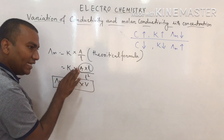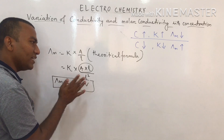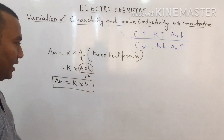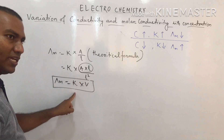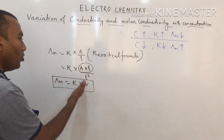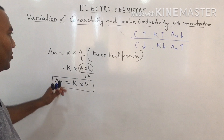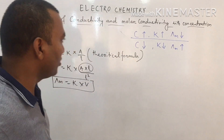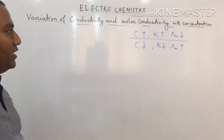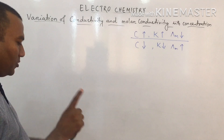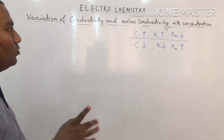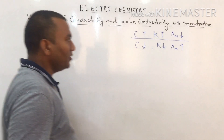When volume increases, the decrease in κ is compensated by the greater increase in volume V. So net λm value always increases on dilution. This holds for both strong and weak electrolytes: concentration decreases → conductivity decreases → molar conductivity increases.